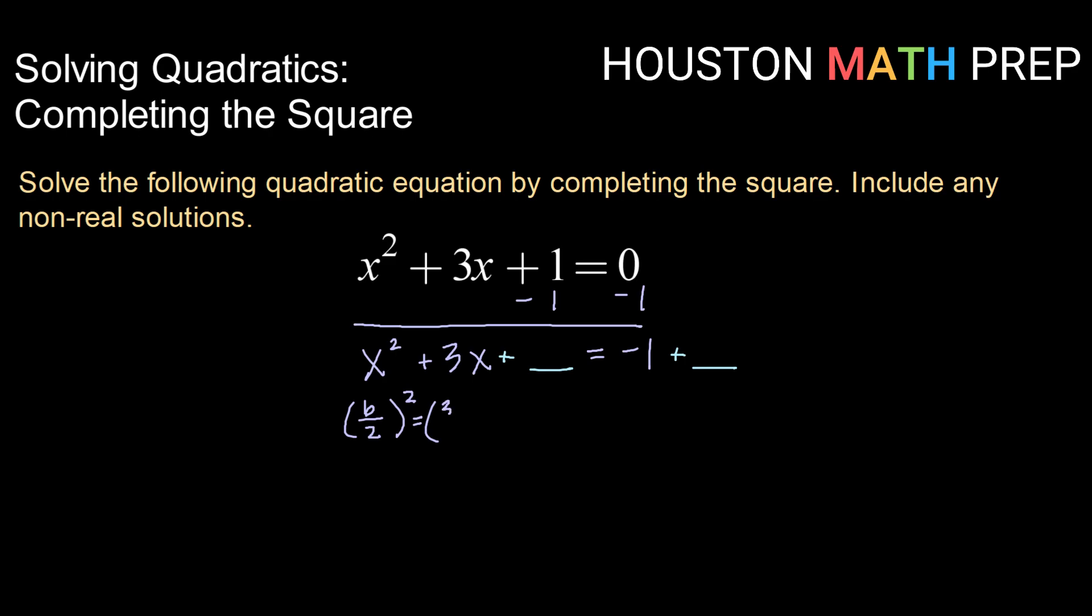In this case our b is 3. So we have 3 divided by 2 squared. Now 3 does not evenly divide by 2 so we'll just go ahead and square that and that gives us 9 over 4.